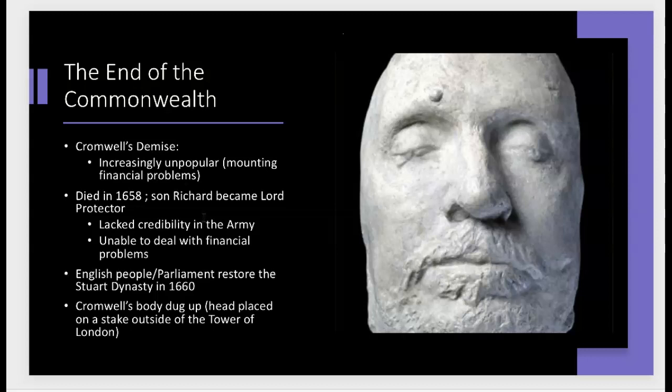The Stuart dynasty was restored in 1660, and believe it or not, Cromwell's body was then dug up — he was beheaded and his head put on a stake outside the Tower of London as a warning to all traitors. There are some who give him a bad rap as a treasonous villain, but in a lot of people's eyes he was very much a hero. We will talk about one of those people momentarily, because it was in this era and this era alone that John Milton lived and wrote his epic poem Paradise Lost.